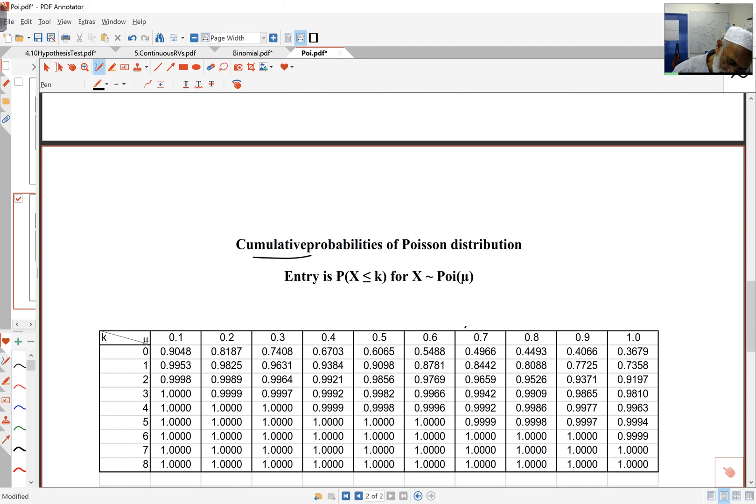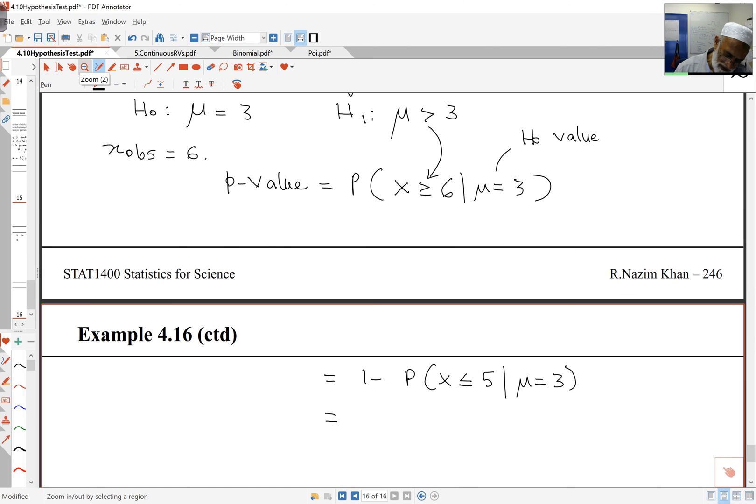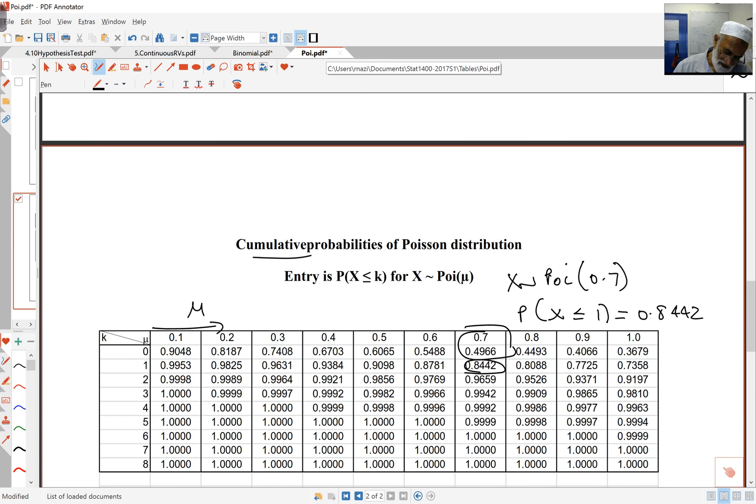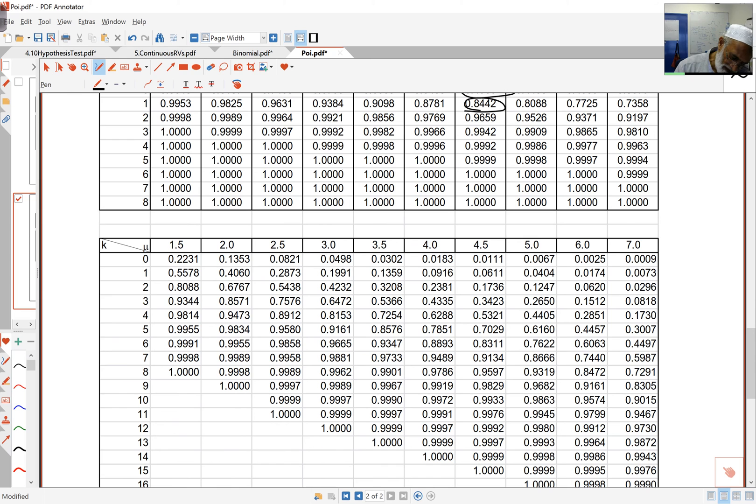In our case, we have Poisson with mean three, and I want X less than or equal to five, which is 0.9161.